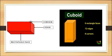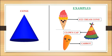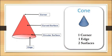Now students, let's move to our second shape: it's cone. Examples: ice cream cone, clown cap, and carrot. Such a shape is known as a cone. Now let's see how many edges, corners, and faces it has.